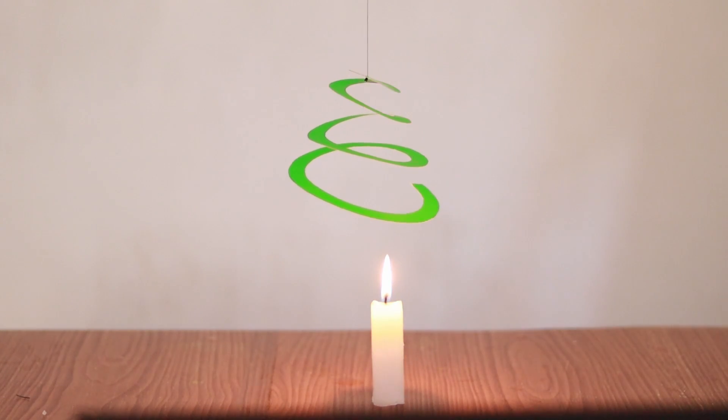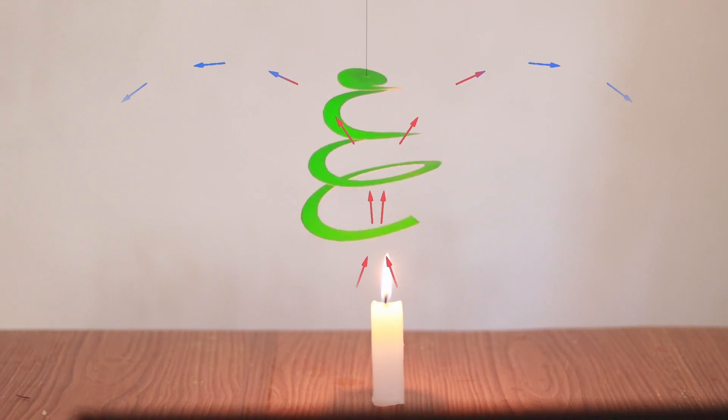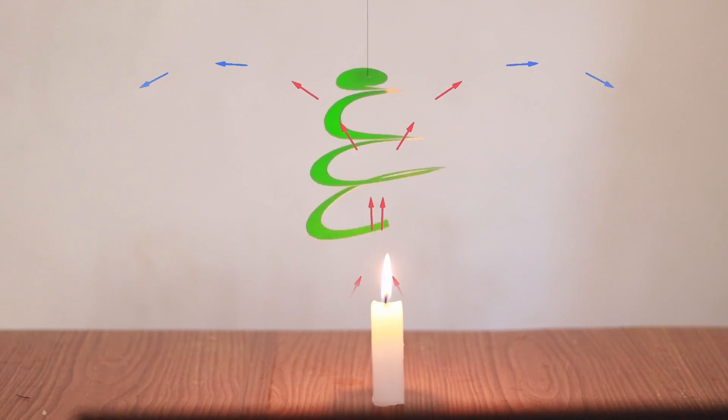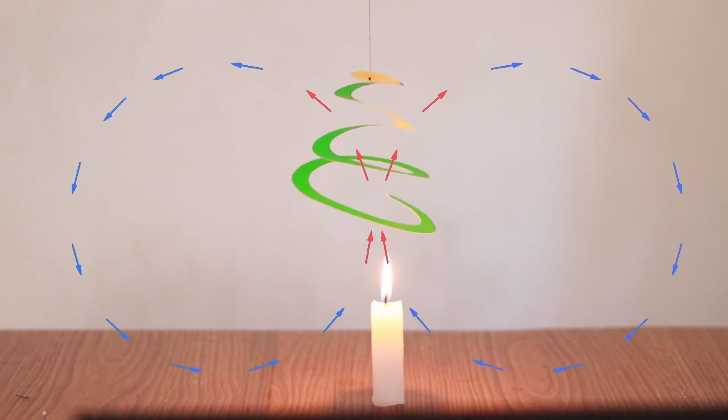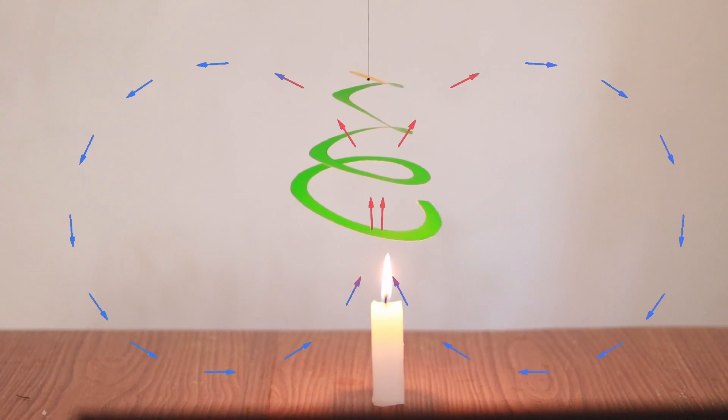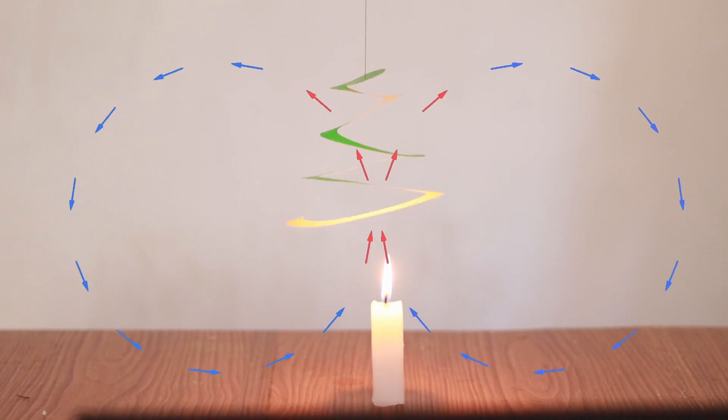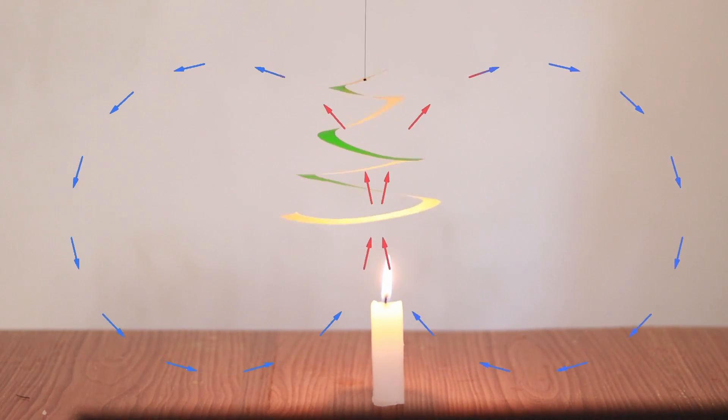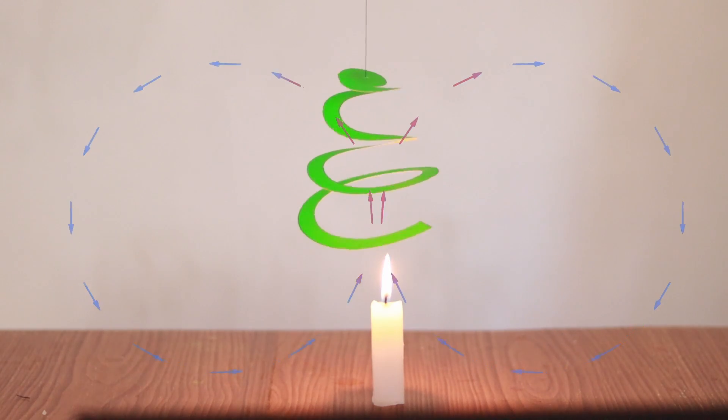This happens as the fluid near the heat source heats up and becomes less dense. This causes the fluid to rise. As the fluid rises, it moves away from the heat source and cools. As it cools, it becomes denser and tends to sink. This heating and cooling process creates a circulation pattern known as a convection current, and it is this current that makes the spiral rotate.